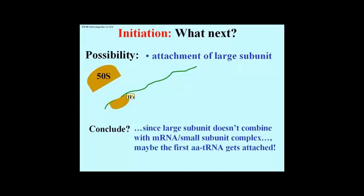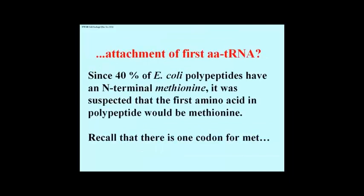We know that amino acid tRNAs are going to have to become part of a translation structure, so perhaps that's the next thing to happen. People had analyzed or extracted E. coli polypeptides in the 50s and 60s, and in the 50s was the first time that people had begun to do amino acid sequencing. It was not automated — it was very tedious. Amino acid sequencing of a number of E. coli polypeptides, enzymes and other proteins, revealed that 40% of those sequenced had methionine at the amino terminus.